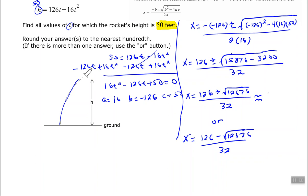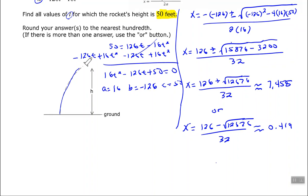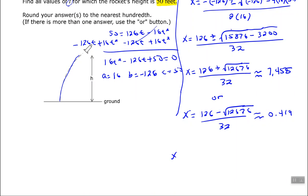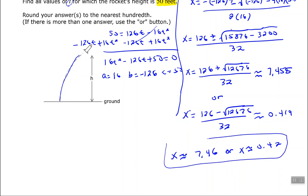You would end up with the decimal numbers 7.455 for the first calculation and 0.419 for the second. Rounding to the nearest hundredth: t is approximately 7.46 or t is approximately 0.42. What that tells us is that at 7.46 seconds and at 0.42 seconds, the rocket is at 50 feet.